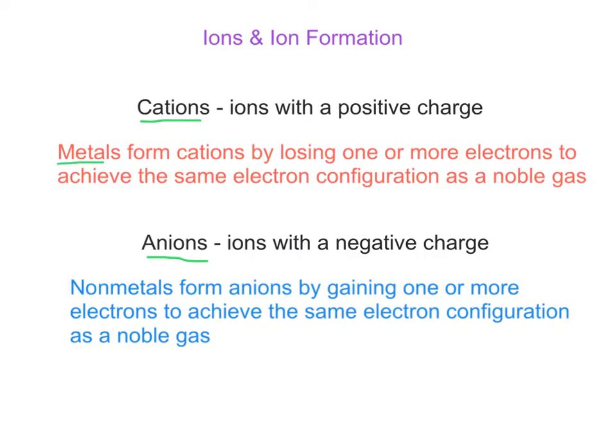Cations come from metals, and what they do is they lose one or more electrons, and since electrons are negative, they become positive, and they lose as many electrons as they need to achieve the same electron configuration as a noble gas.